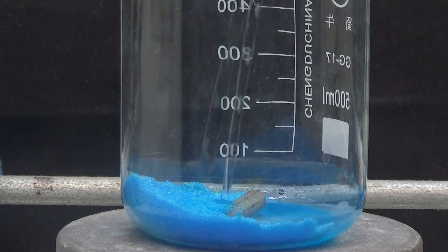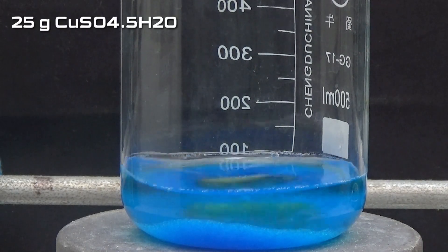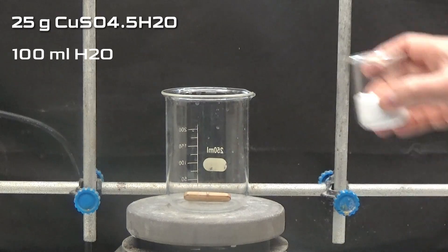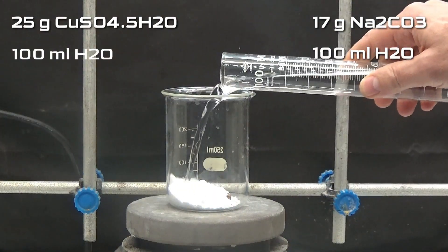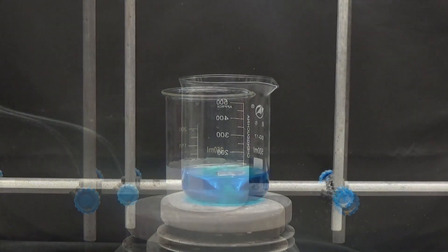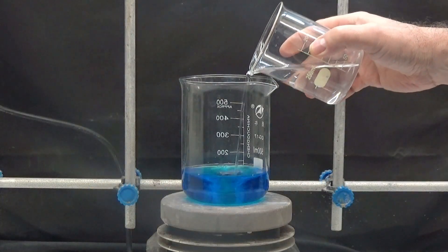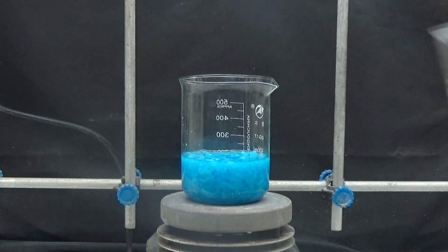I prepare two solutions: a solution of 25 grams of copper sulfate pentahydrate in 100 milliliters of water and another solution of 17 grams of anhydrous sodium carbonate in 100 milliliters of water. Add the carbonate solution over the copper sulfate solution and a blue colored copper carbonate precipitate is formed.